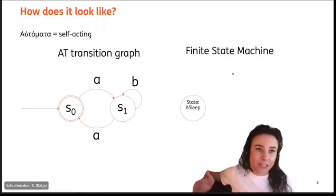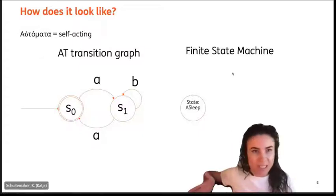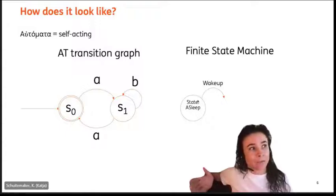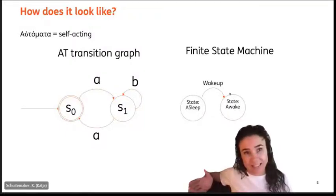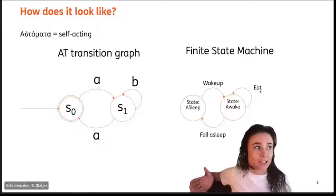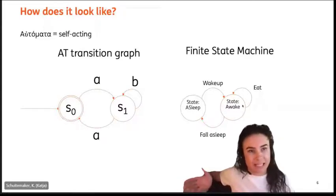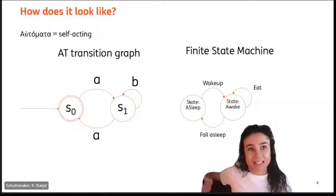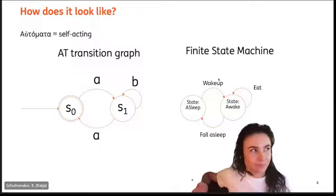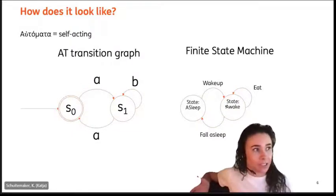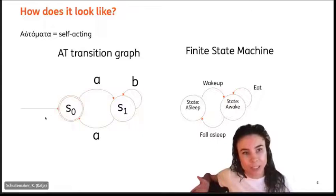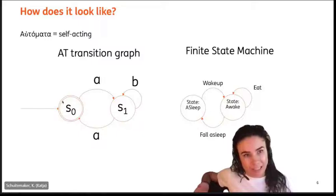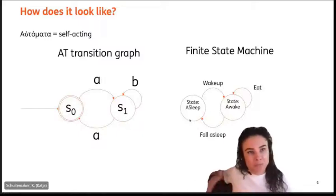A finite state machine is visualized a bit differently but they are alike. For example, we have a state 'asleep'; when we execute 'wake up' we are in the state 'awake'; if we execute 'eat' we stay in state 'awake'; and if we execute 'fall asleep' we will be in the state 'asleep' again. As you can see they're quite similar — only transition graphs make use of arrows without sources and double circles to indicate a final state, but they are alike.